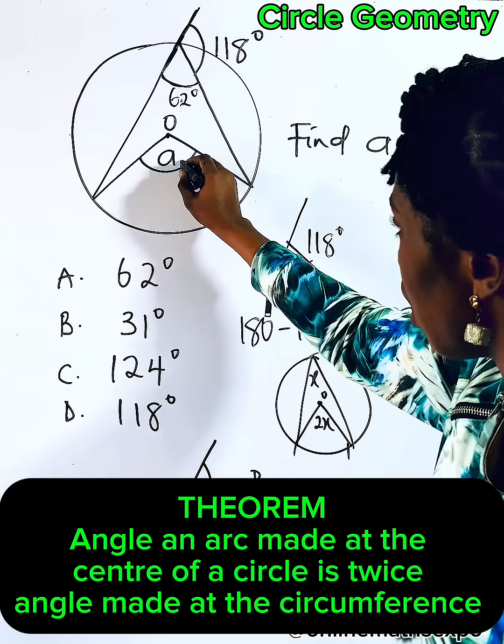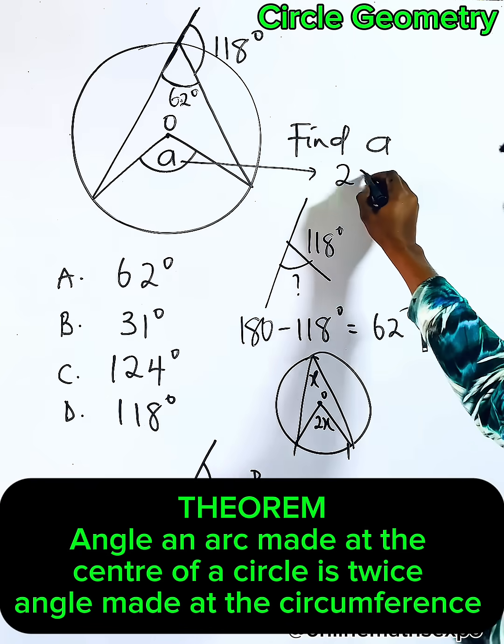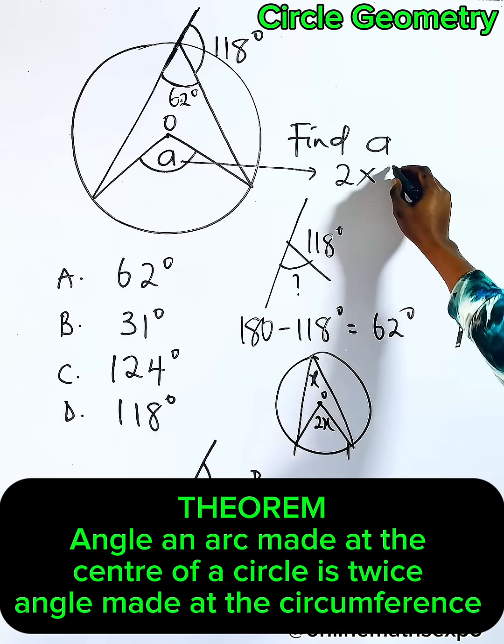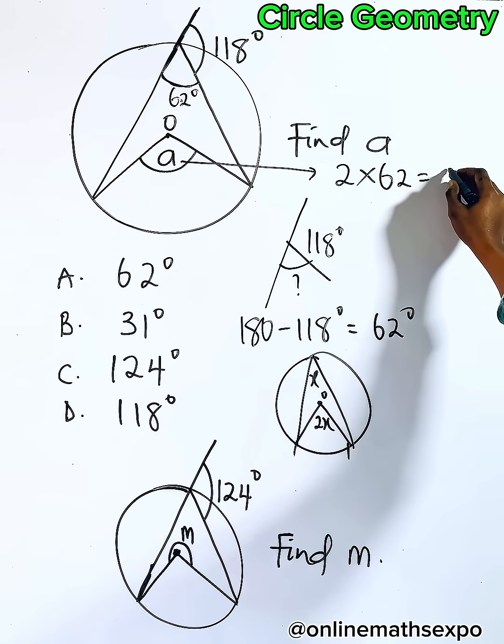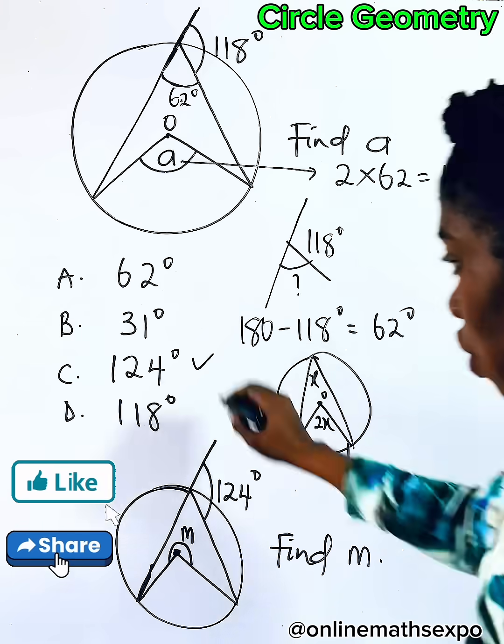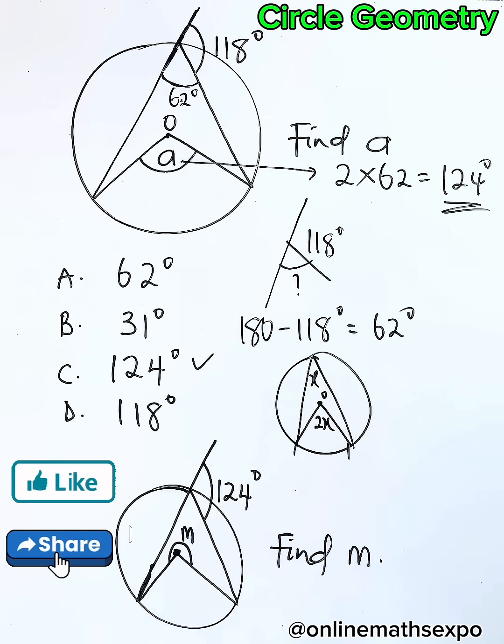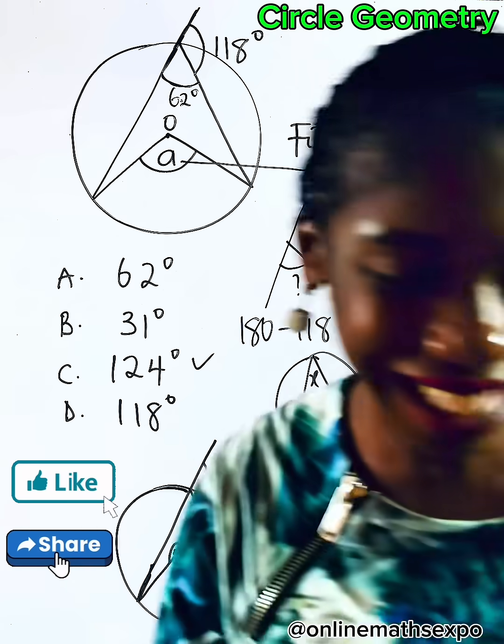So using this theorem, if here is 62, 'a' is going to be two times what you have here, which is 2 times 62, and that will give us 124 degrees, which is option C. What do you think about this? Be careful, bye bye.